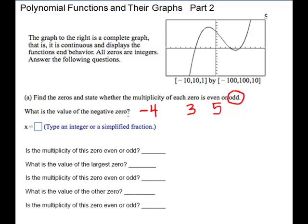What is the value of the negative zero? Our negative zero is negative four, and that's what you would type in that box. Is the multiplicity of this zero even or odd? It is odd. What is the value of the largest zero? Would be five. Is this multiplicity even or odd? It is odd. And what is the value of the other zero? It is three, and it is also odd.